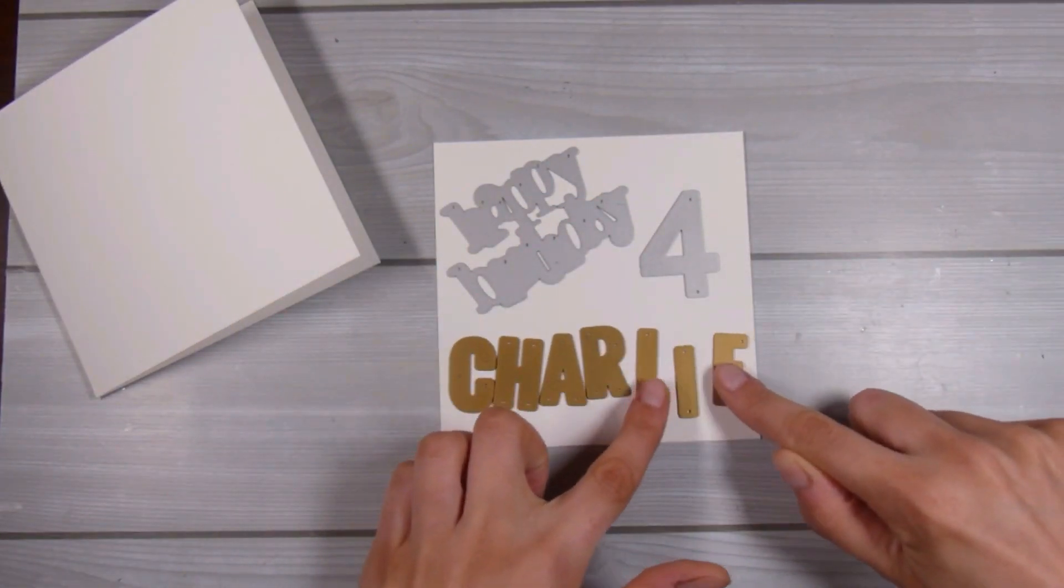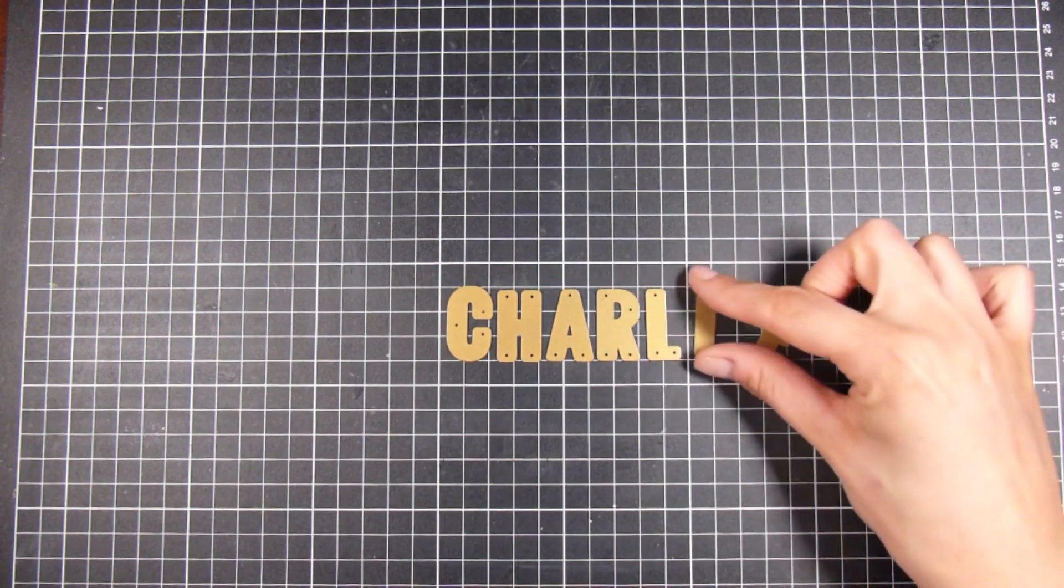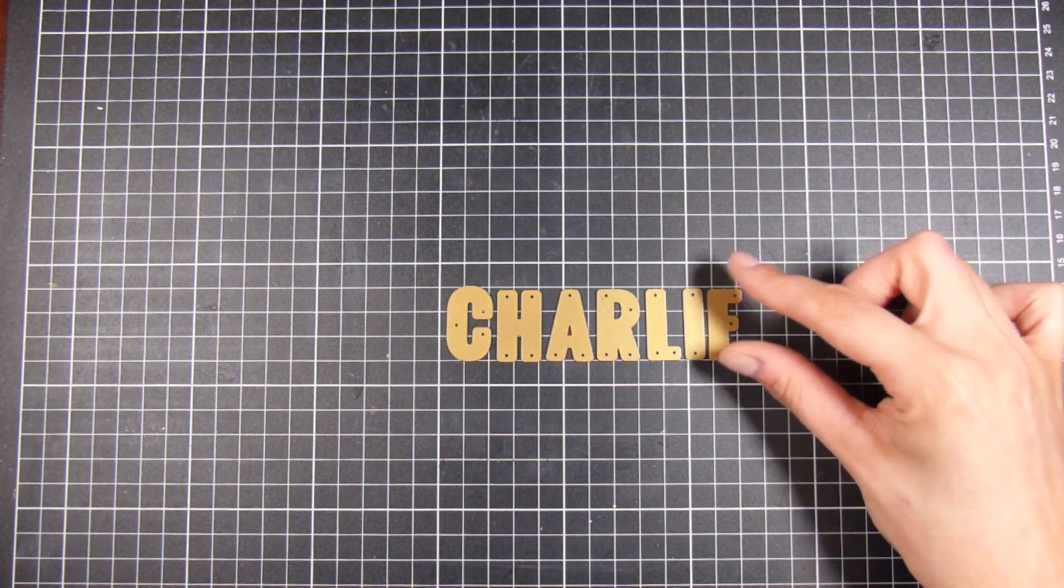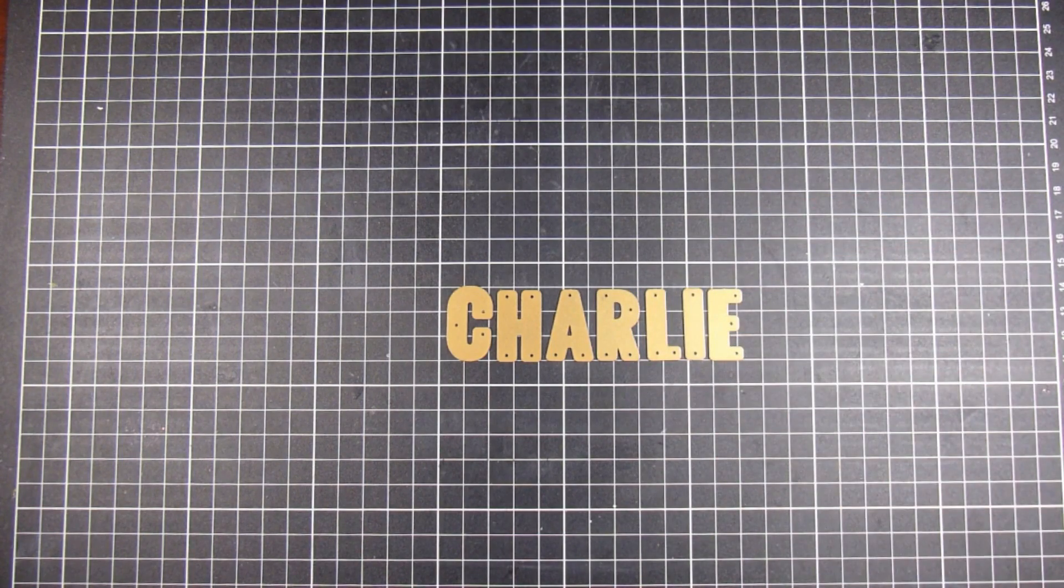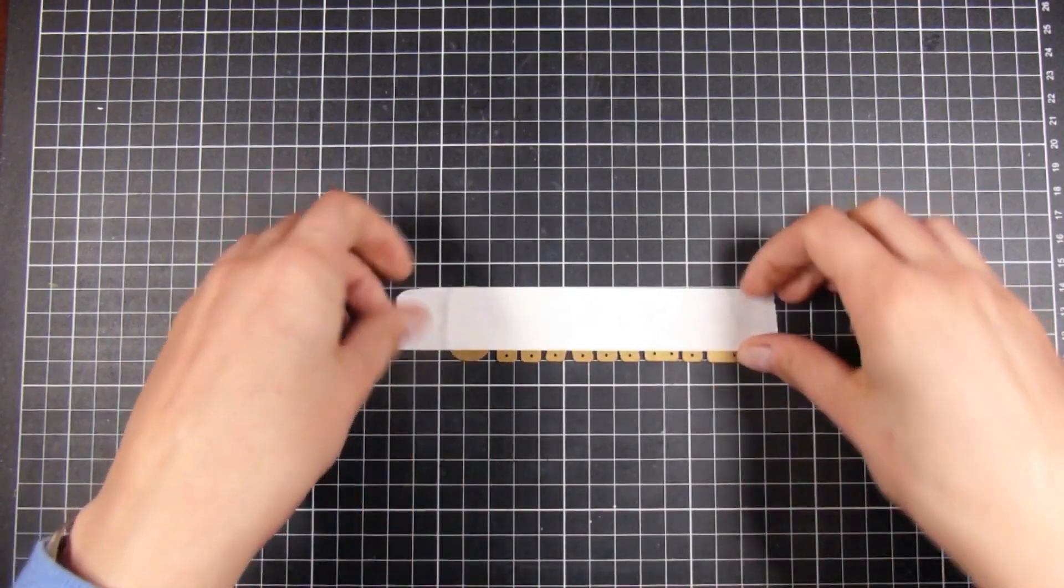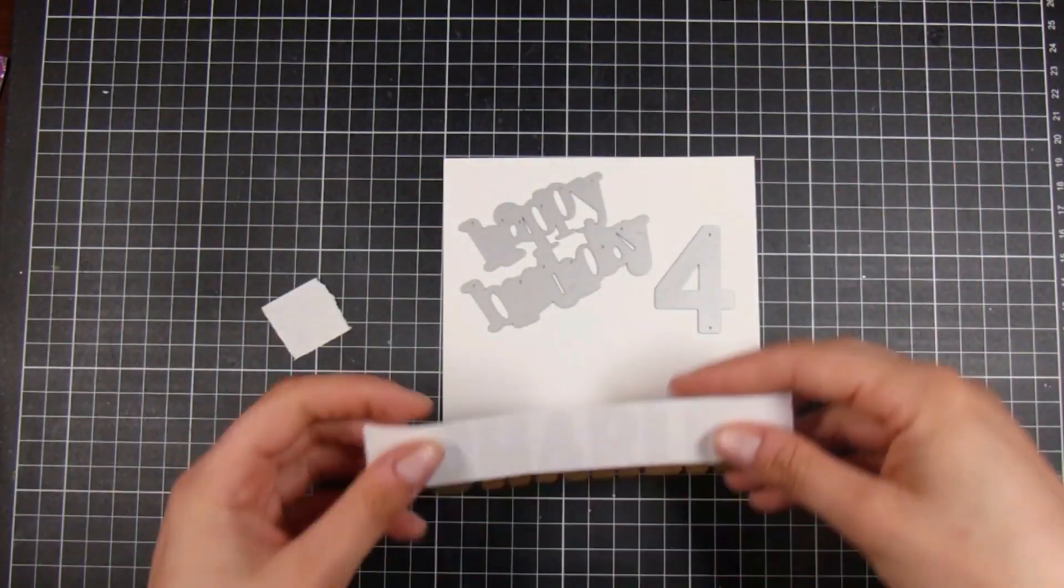I am going to be spelling out this little girl's name. This is for a girl called Charlie, and I am just going to pick out all these little dies. These are I think they're like just over an inch tall maybe.